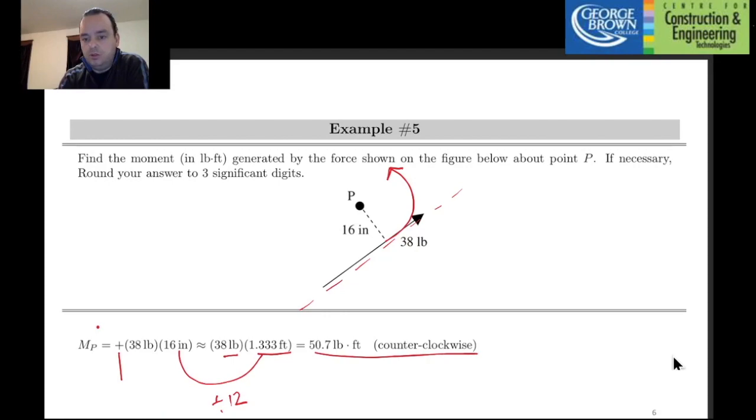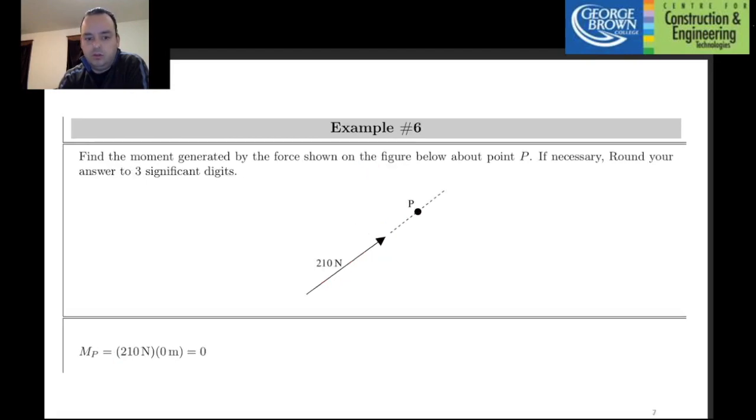Also, notice that a counterclockwise turning effect would be created. This means that the moment, which is indicated positive here, is what the answer has as well. It's very customary to use pounds and feet. So, that's why I've converted the inches to feet simply by dividing by 12. Is it possible to have no moment or zero moment? And under what circumstances would that occur? Well, the next example indicates this very well. Here, you have a force of 210 Newtons, and its line of action is going right through P. So, you might look at this question and say, I can't solve the question because I don't know what D is. But, in fact, you do know what D is. D is zero. Because there is no distance offset between the line of action and this point P. So, there you go. Zero. And because that distance is zero, therefore, the moment is also zero.